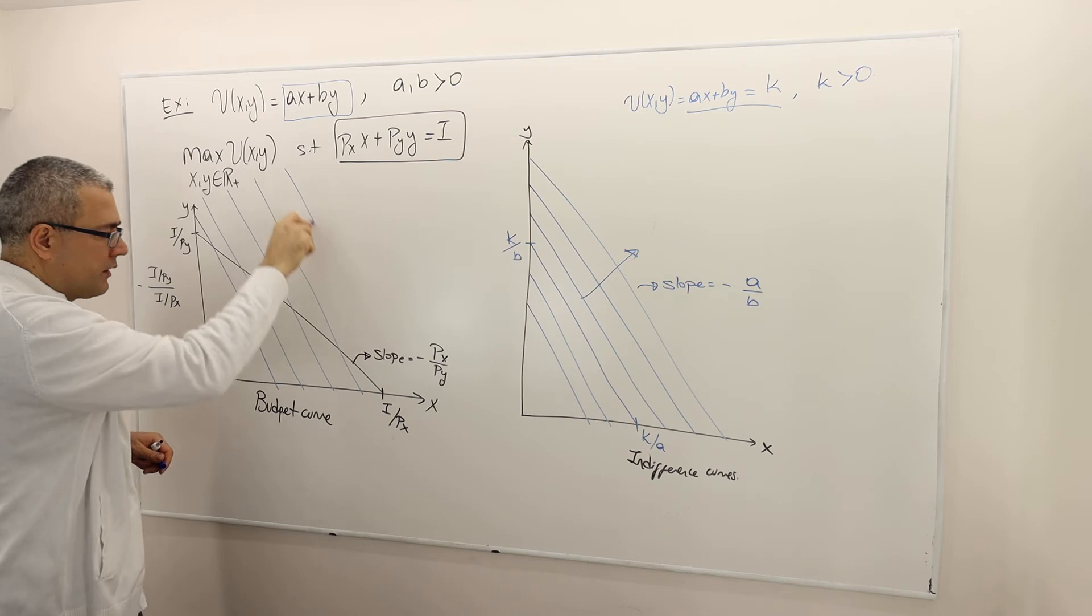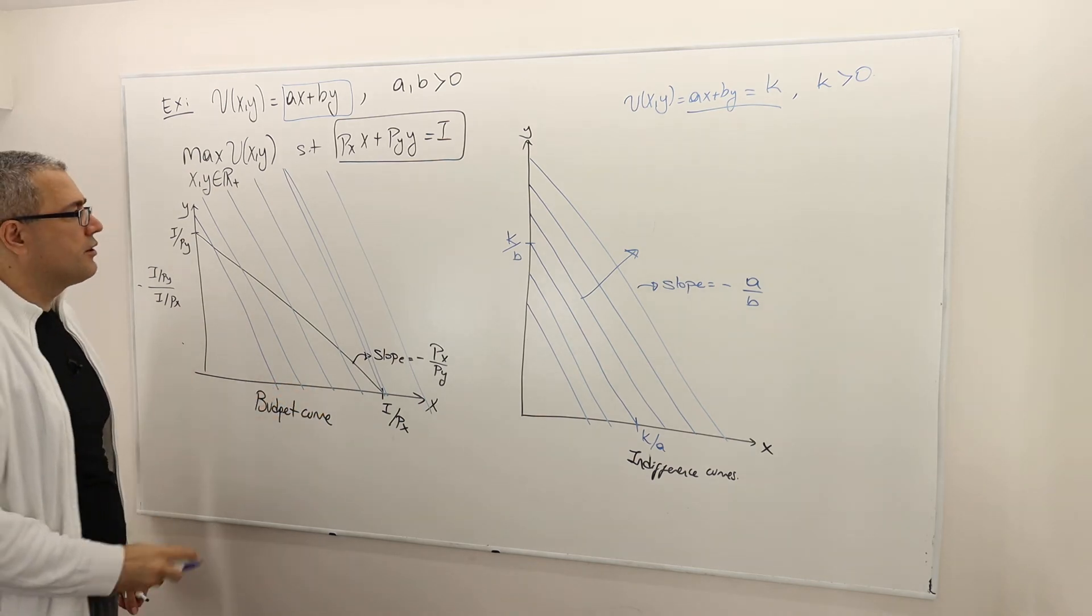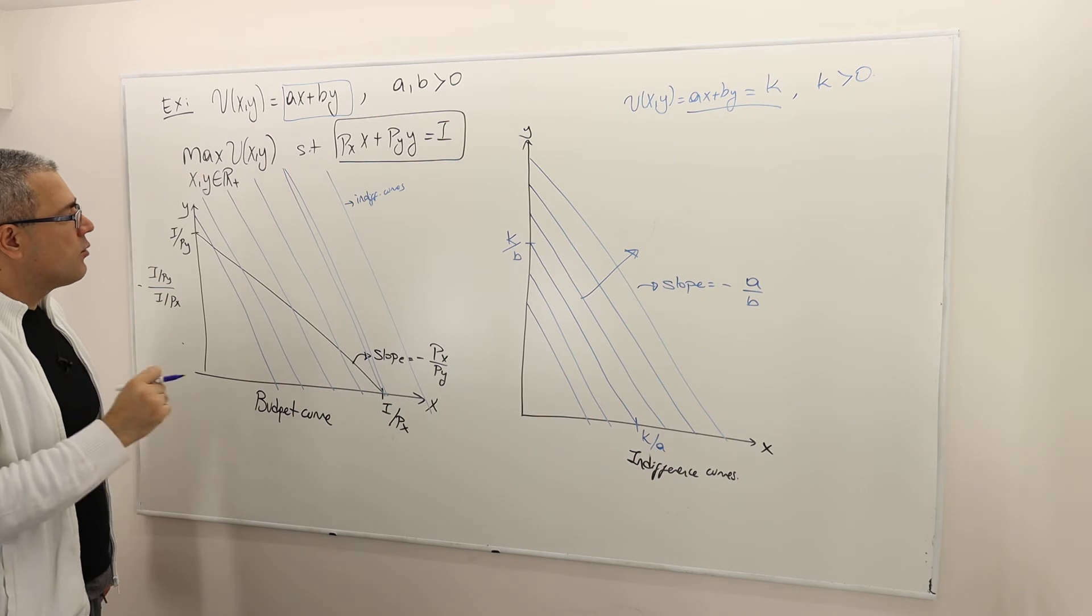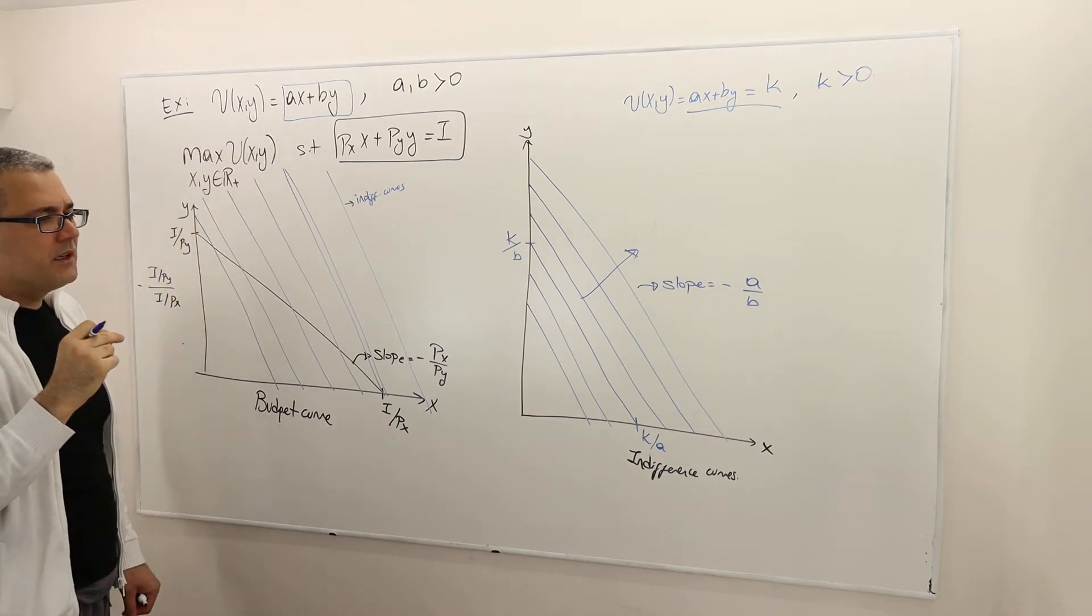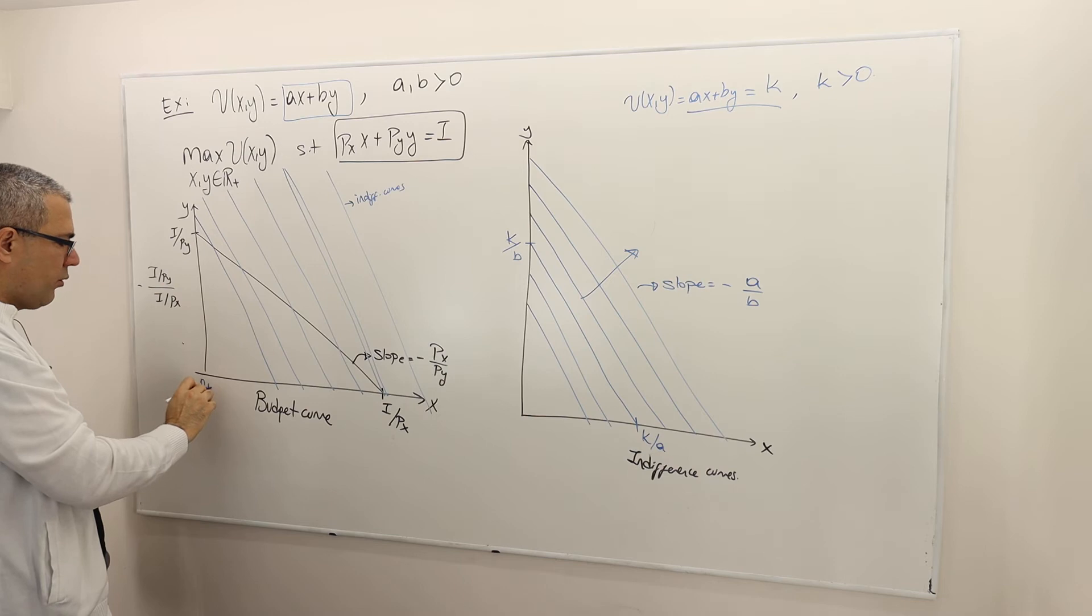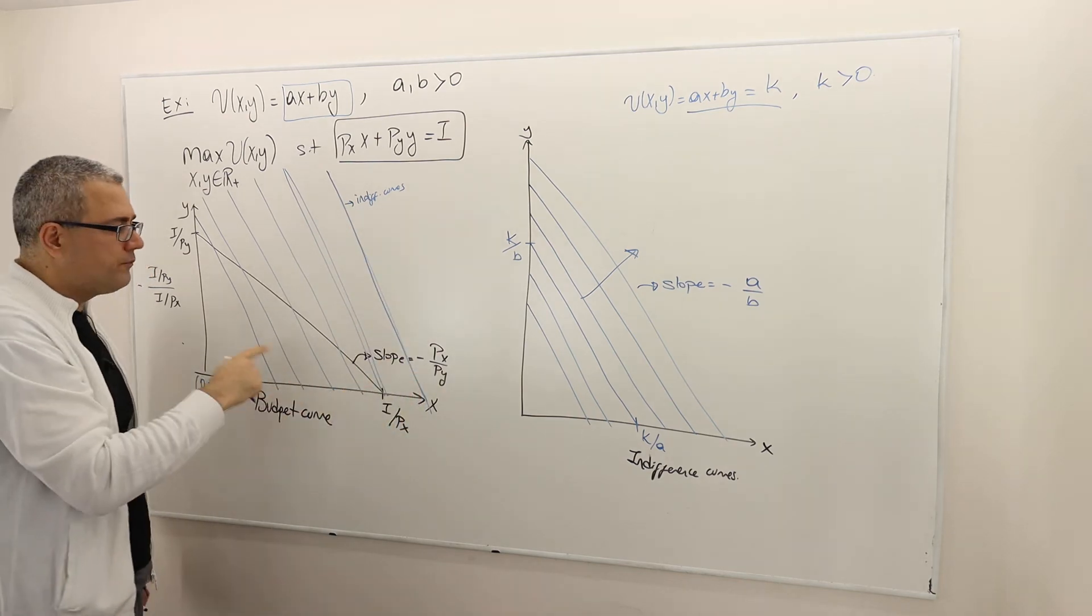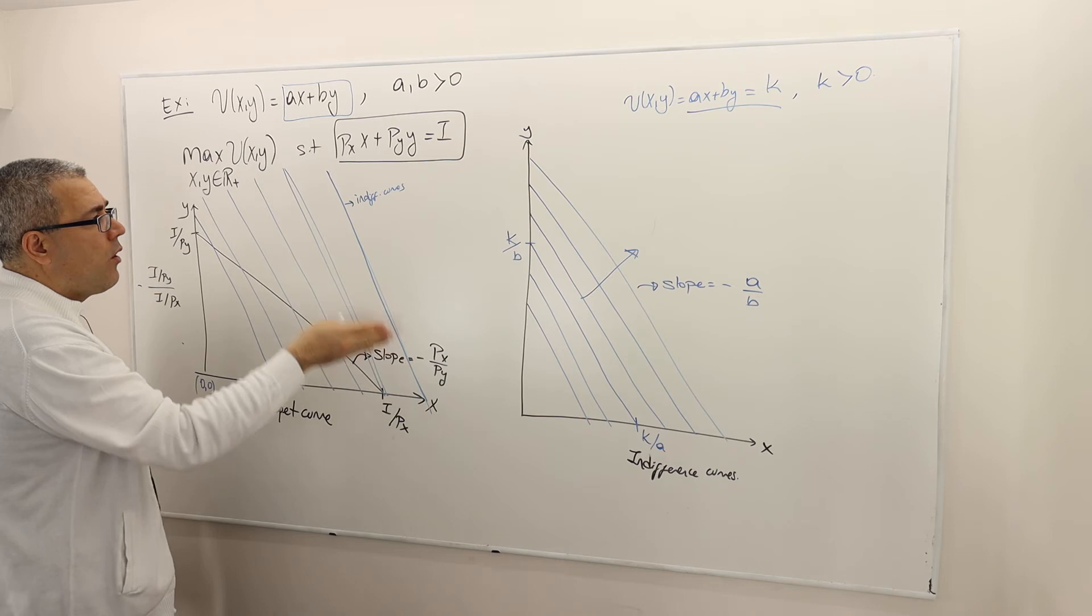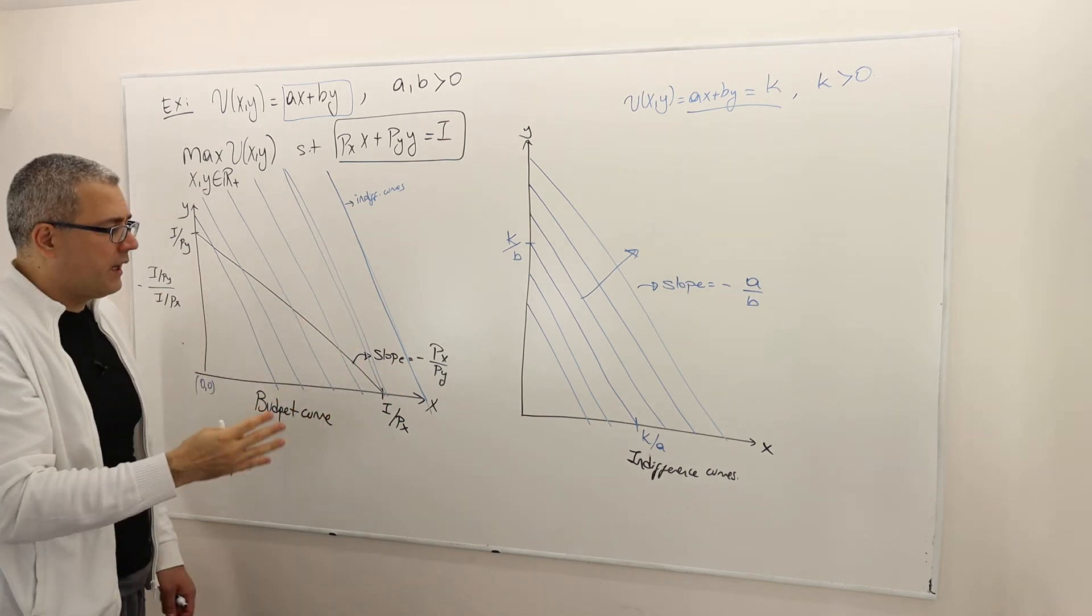So the blue curves are steeper. These are the indifference curves and my budget line. The question is, where is the optimal point? Maximized utility means find the farthest indifference curve from the origin. For example, this is the farthest indifference curve that I draw. However, none of the points on this curve is affordable because all of those points are outside of my budget set. So the optimal allocation is not going to be on this curve, that's for sure.